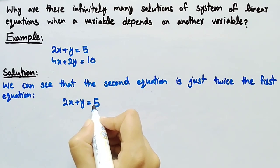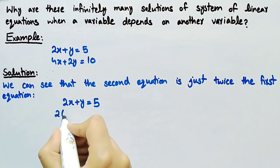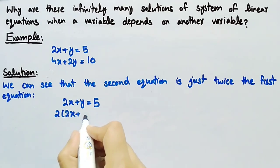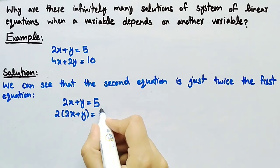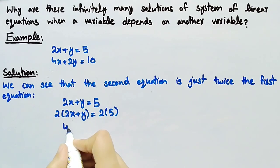If we multiply 2 on both sides of this equation, we get 2 times 2x plus y equal to 2 times 5. That is 4x plus 2y equal to 10.